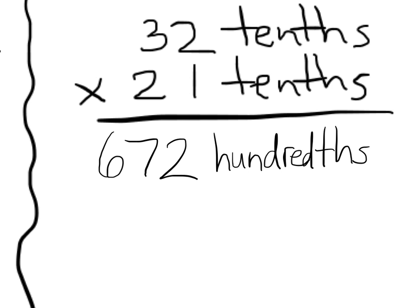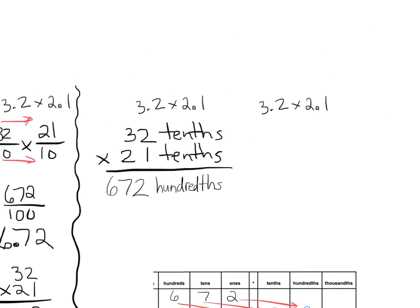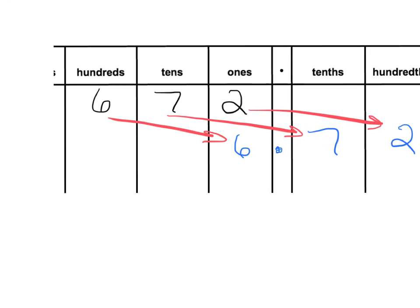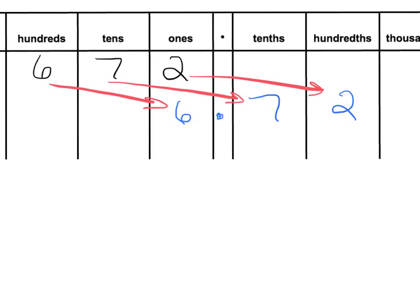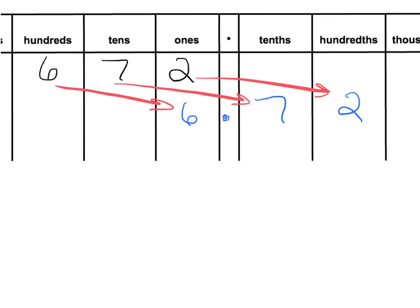Now I've already shown you that 32 times 21 is 672. So we're going to get 672, but then we have to think about tenths times tenths. And tenths times tenths is hundredths. So 672 hundredths.